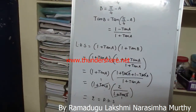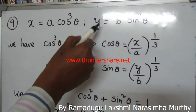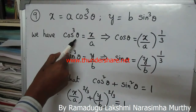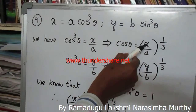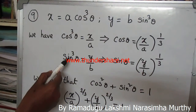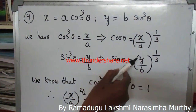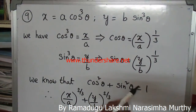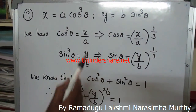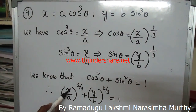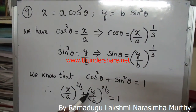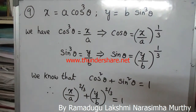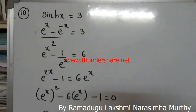Given x = a·cos³θ and y = b·sin³θ. To eliminate θ: cos³θ = x/a, so cos θ = (x/a)^(1/3); sin³θ = y/b, so sin θ = (y/b)^(1/3). Using the identity cos²θ + sin²θ = 1, replacing gives (x/a)^(2/3) + (y/b)^(2/3) = 1. Hence θ has been eliminated.